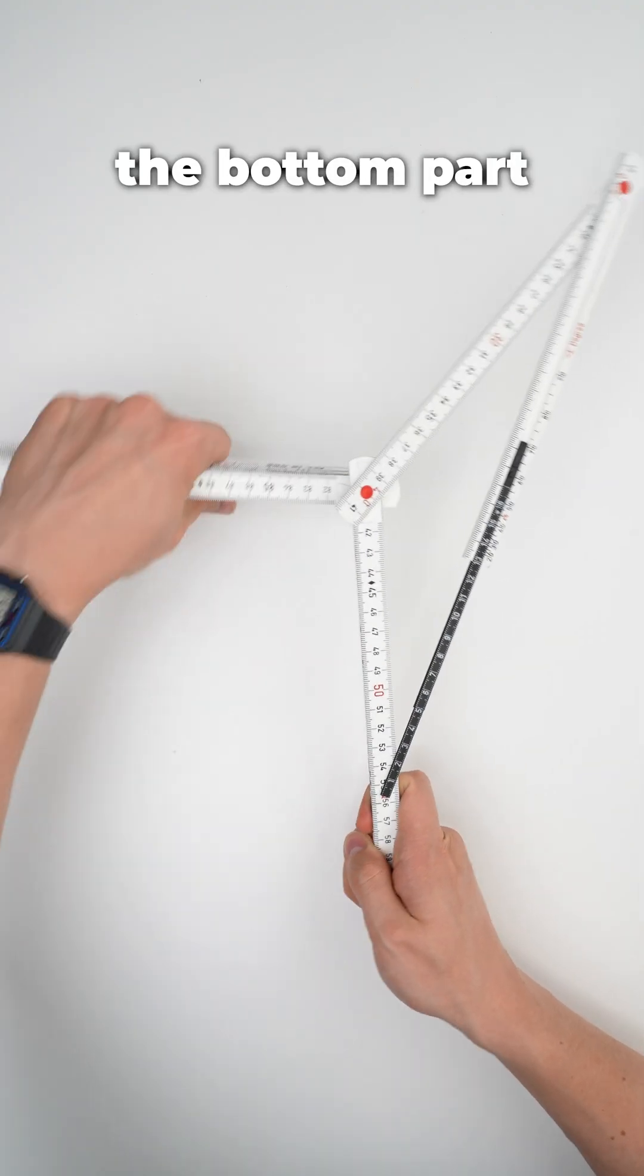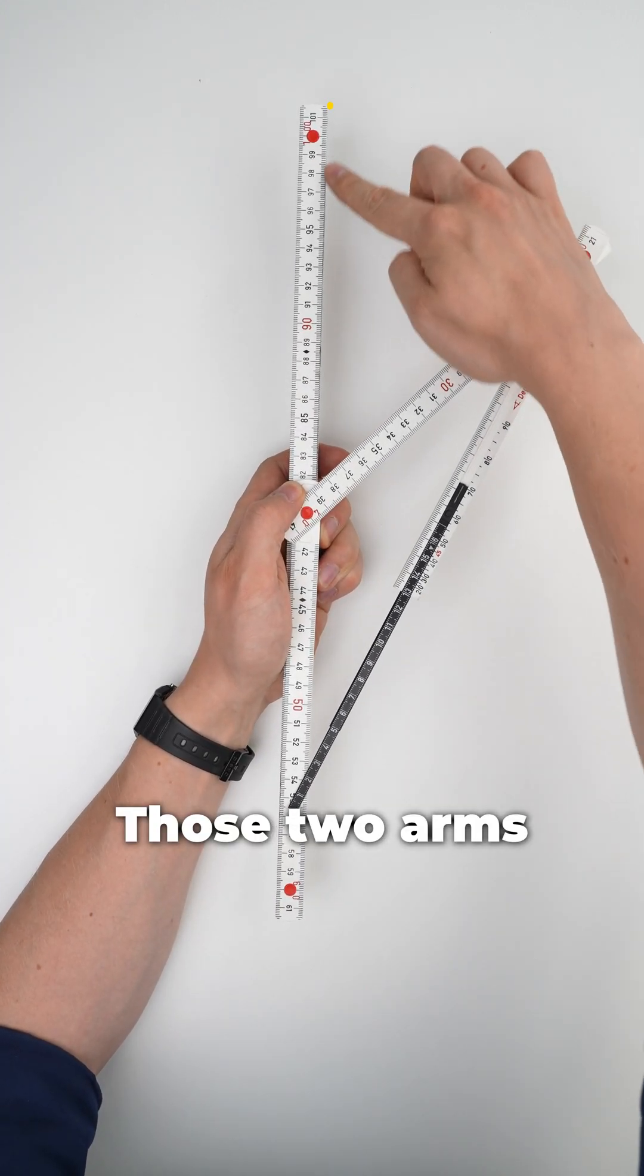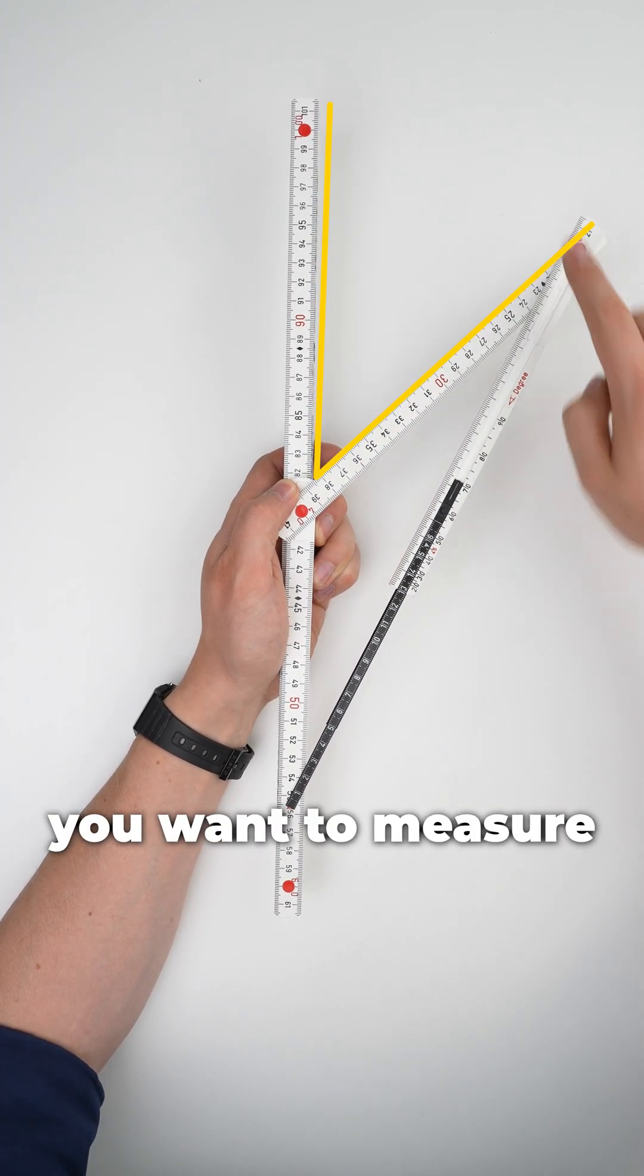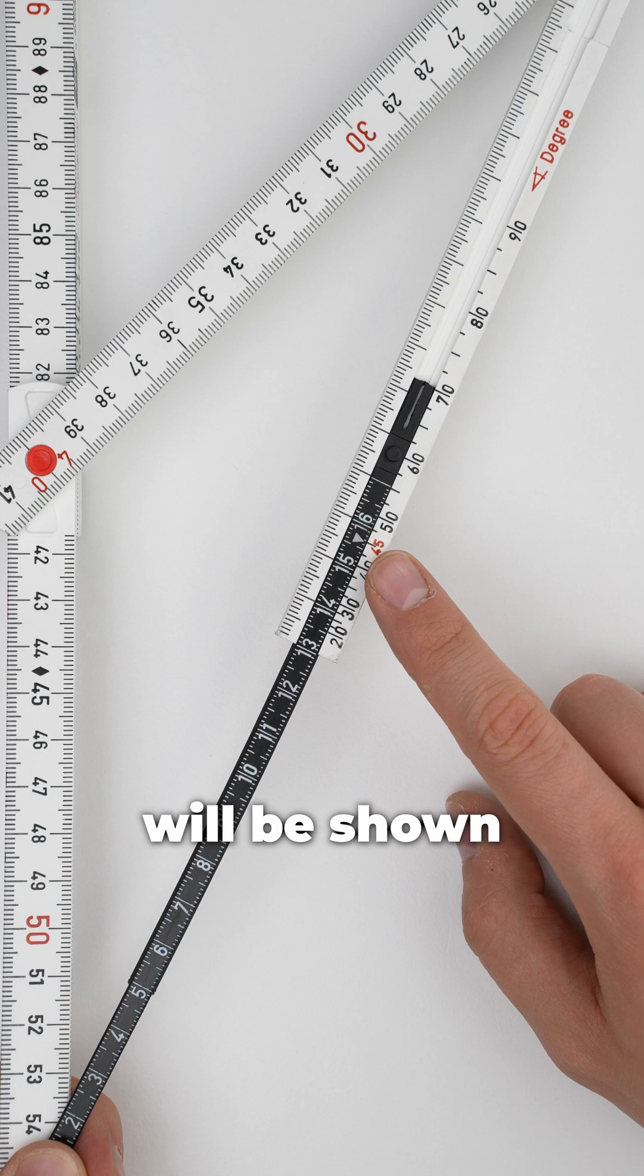Unfold the bottom part till it locks in a straight line. Those two arms are the angle you want to measure and the degrees will be shown here.